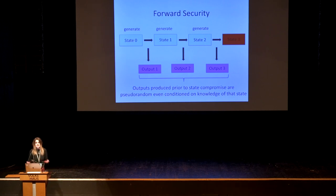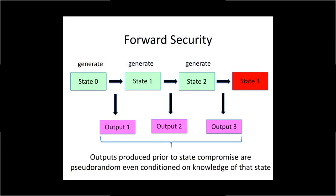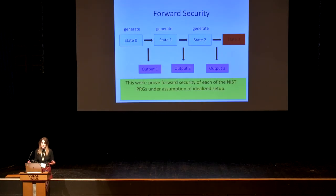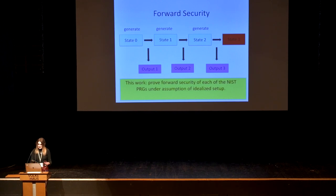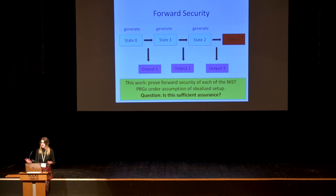Forward security — stated as a security goal by the standard — says that if at some point an attacker can compromise the state of the generator, then all output produced prior to the point of compromise remains pseudo-random, even conditioned on knowledge of that state. In this work, we prove the forward security of each of the NIST PRGs under the assumption that the initial state is constructed correctly. But given how the NIST PRGs don't look like the ones in the literature, this raises the question: is forward security covering all attack vectors and giving us sufficient assurance in the event that the state is compromised?